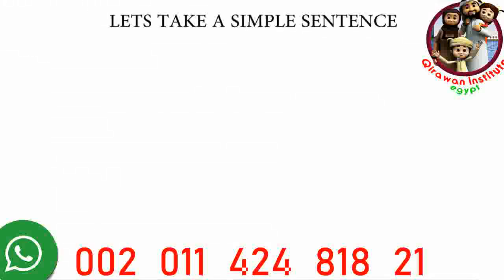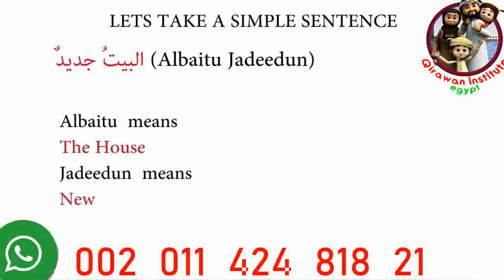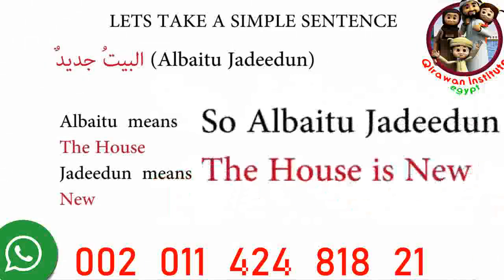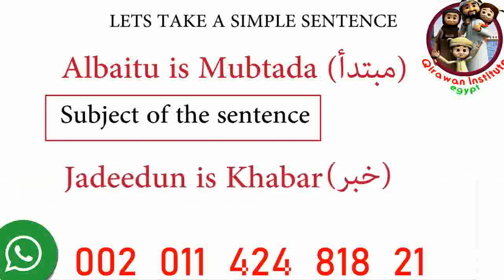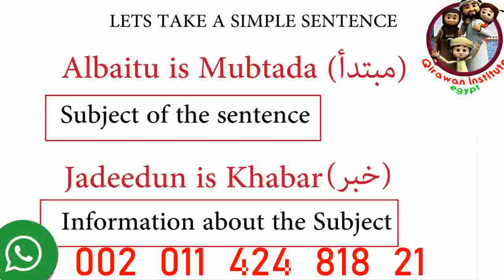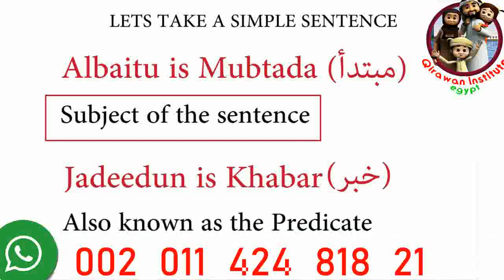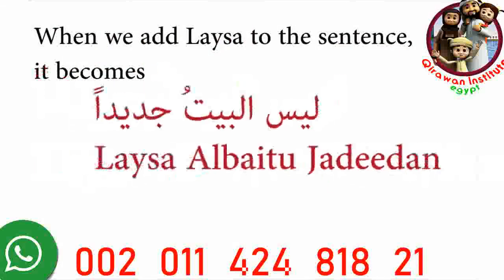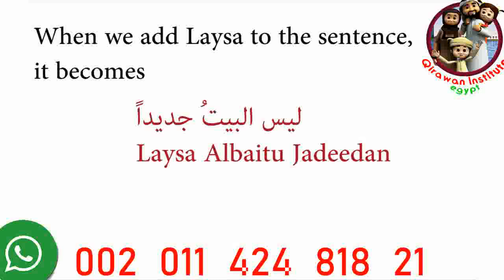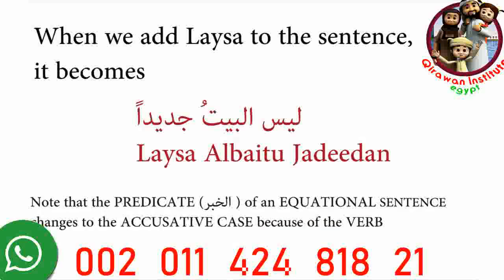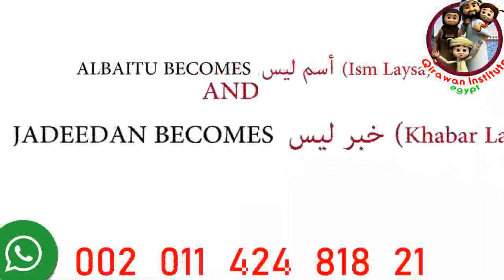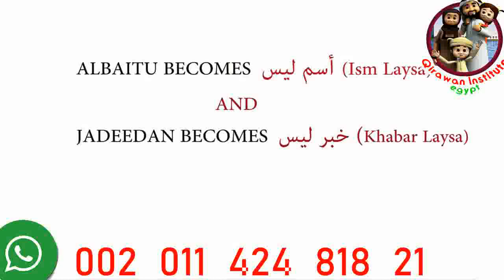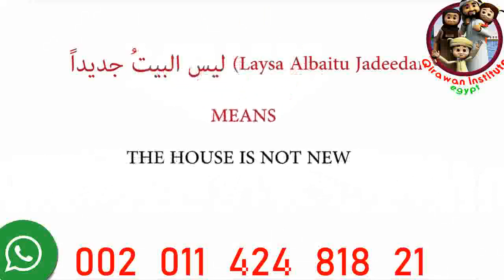Let's take a simple sentence: al-baytu jadidun. Al-baytu means 'the house,' jadidun means 'new,' so the sentence means 'the house is new.' Al-baytu is mubtada, or the subject of the sentence, and jadidun is khabar, or the predicate. When we add leysa to the sentence, it becomes leysa al-baytu jadidan. Al-baytu becomes isam leysa and jadidun becomes khabar leysa. Leysa al-baytu jadidan means 'the house is not new.'